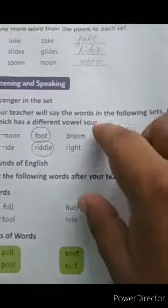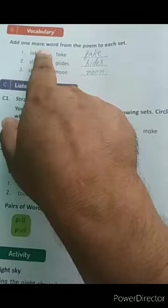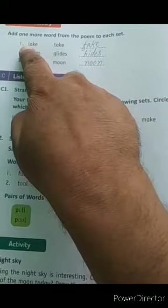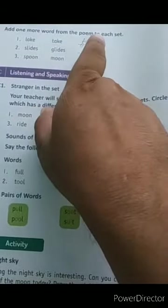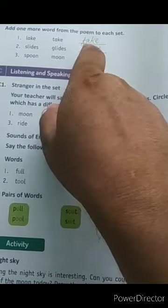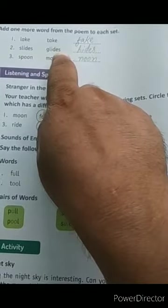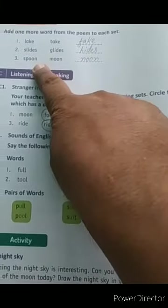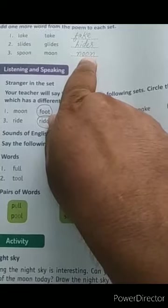When we read vocabulary, we will interpret vocabulary. Add one more word from the poem to each set. If you can see here, first is take, lake, and one word you want to add would be fake. Second is the slides, the glides, and the hides. Third is the spoon, moon, and blank comes the noon.